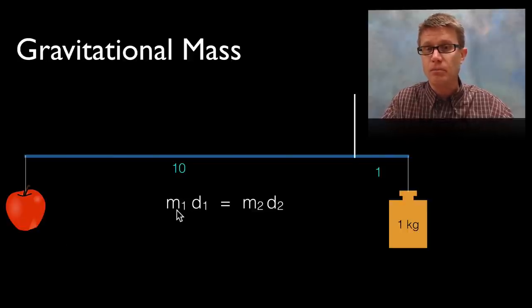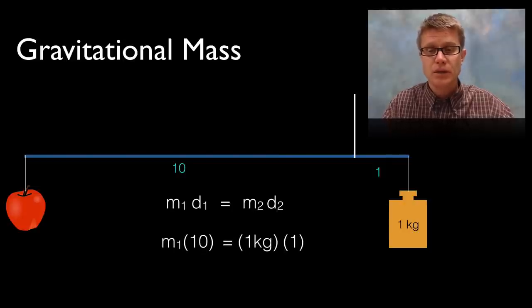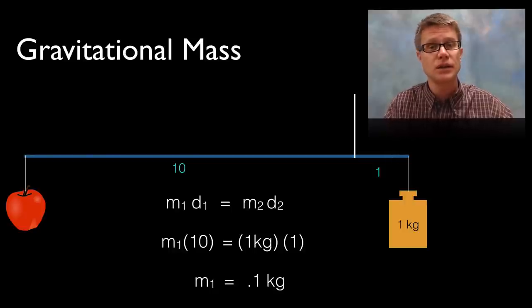And I simply solve like this. On the left side we have got my mass 1, that is the mass of the apple, times the distance, in this case it is going to be 10. On the right side we have the mass of the known mass, the kilogram, times the distance which is 1. And so I just plug in those values and then I solve for the mass of the apple, and it is going to be a tenth of a kilogram.